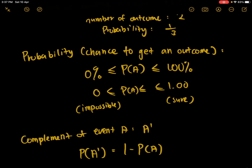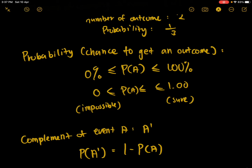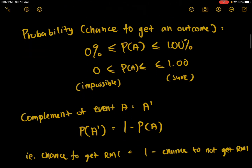The probability is expressed as a percentage. If you convert it to a decimal, the probability cannot be lower than 0% or higher than 100%. 100% means it's definitely going to happen — we call it a sure event. When we're talking about a 0% chance of happening, we call it impossible, or not possible.